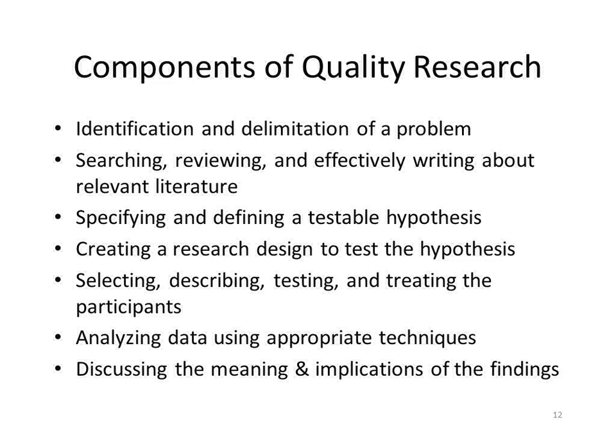Here are some components of quality research. Think of these as both ways to be critical of articles that you read, but also as the objectives of the paper you need to submit at the end of this class for your proposal and when you try to submit for your defense. Make sure that you identify, delimit, and permit — that means you've appropriately identified the problem and defined the scope of the problem. Show that you can search, review, and effectively write about the relevant literature, hitting all key components and building an argument for your hypothesis.